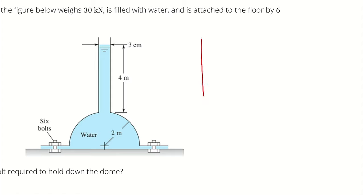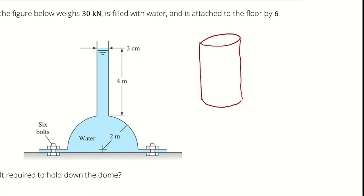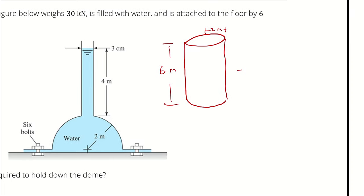To represent the volume of the displaced water, I'm going to start with the volume of a cylinder that has a radius of two meters and a height of six meters. Then I'm going to subtract the volume of a hemisphere that has a radius of two meters, and then I'm going to subtract the volume of that connecting tube on the top.